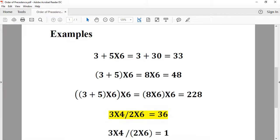3 times 4 over 2 times 6. 3 times 4 equals 12, 12 over 2 equals 6, 6 times 6 equals 36.